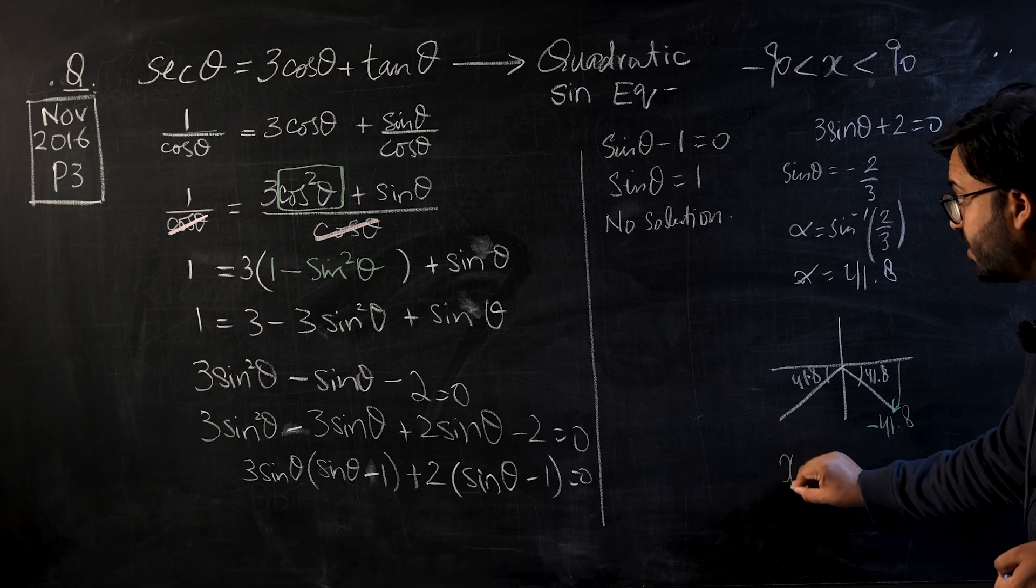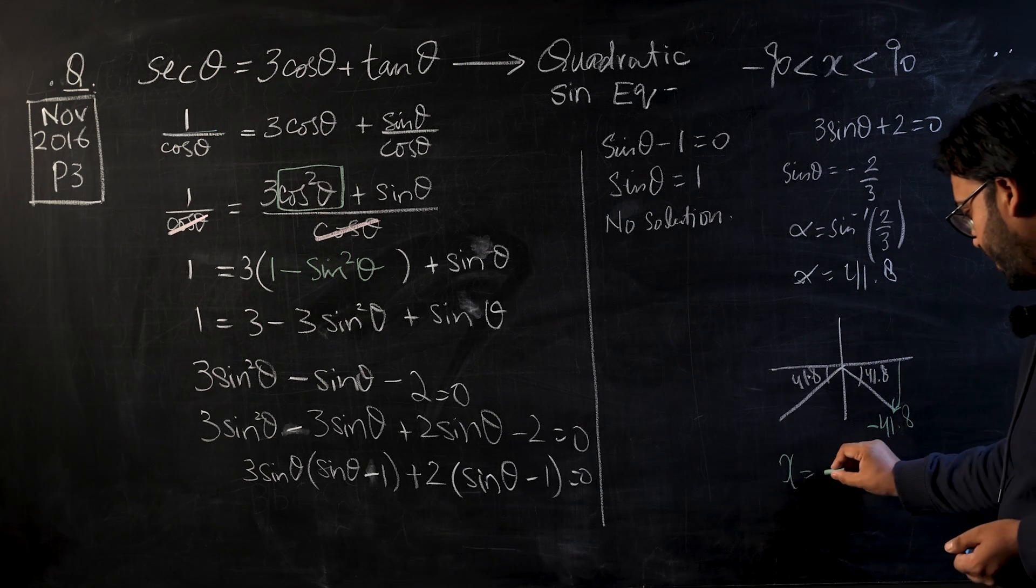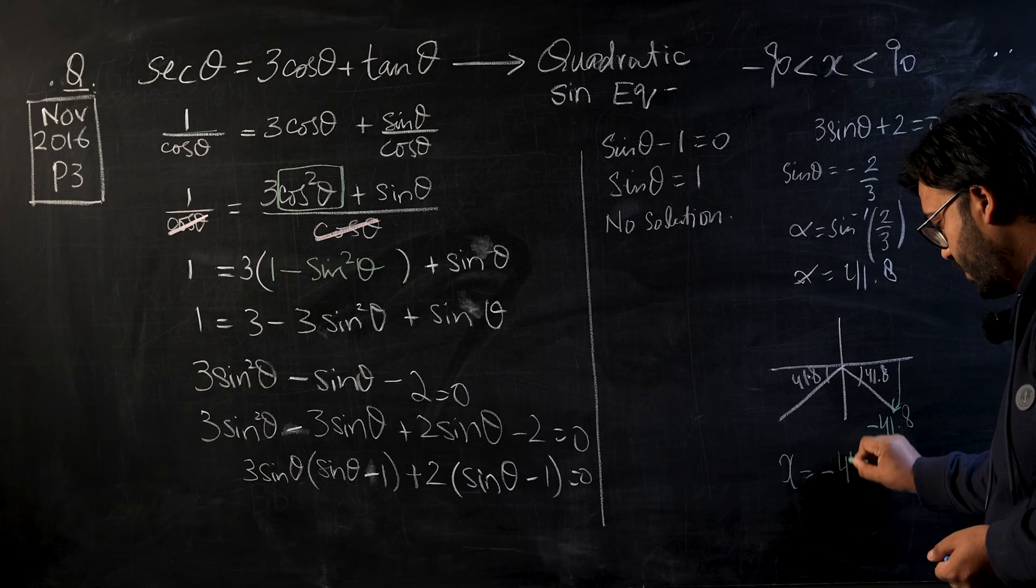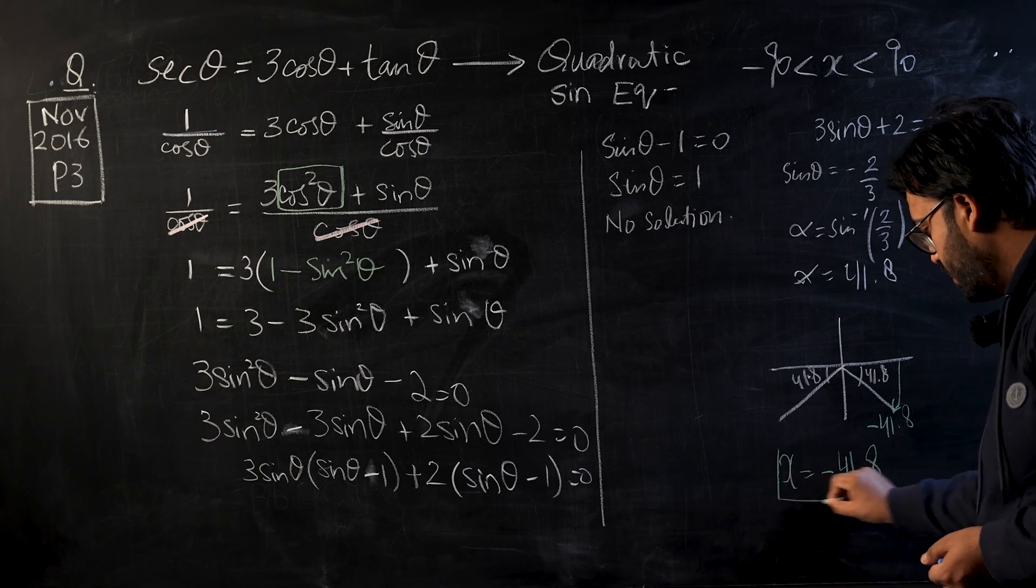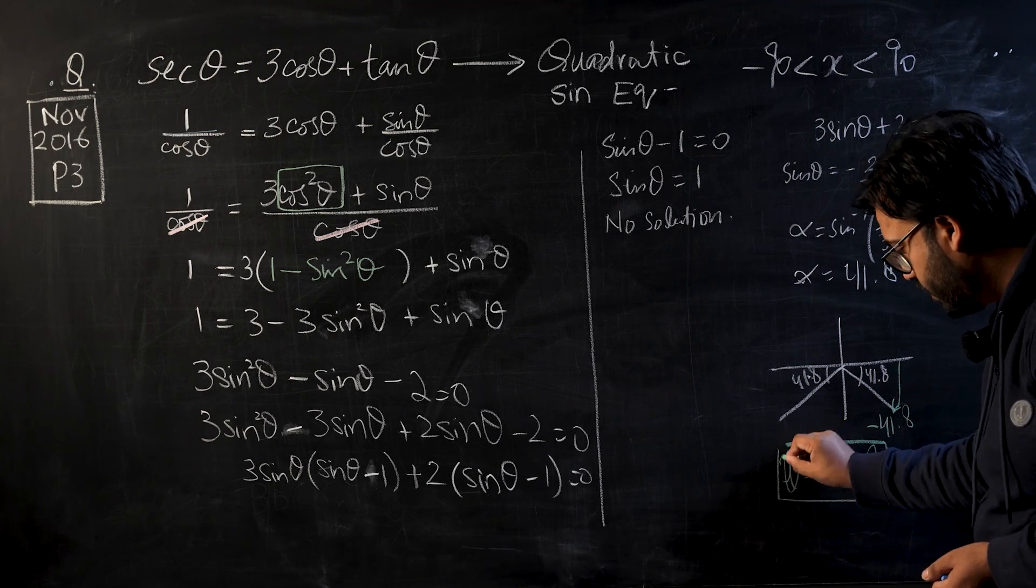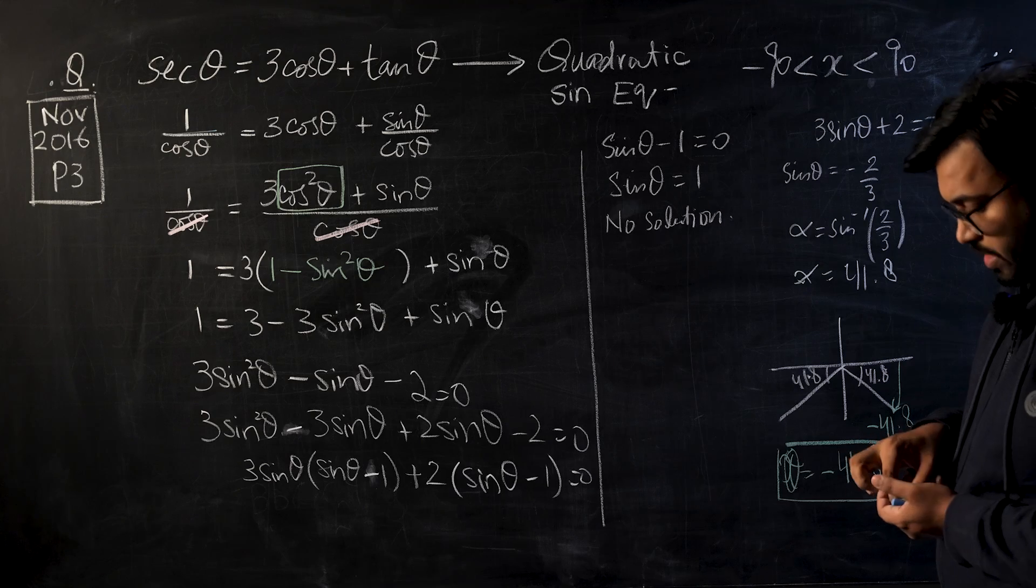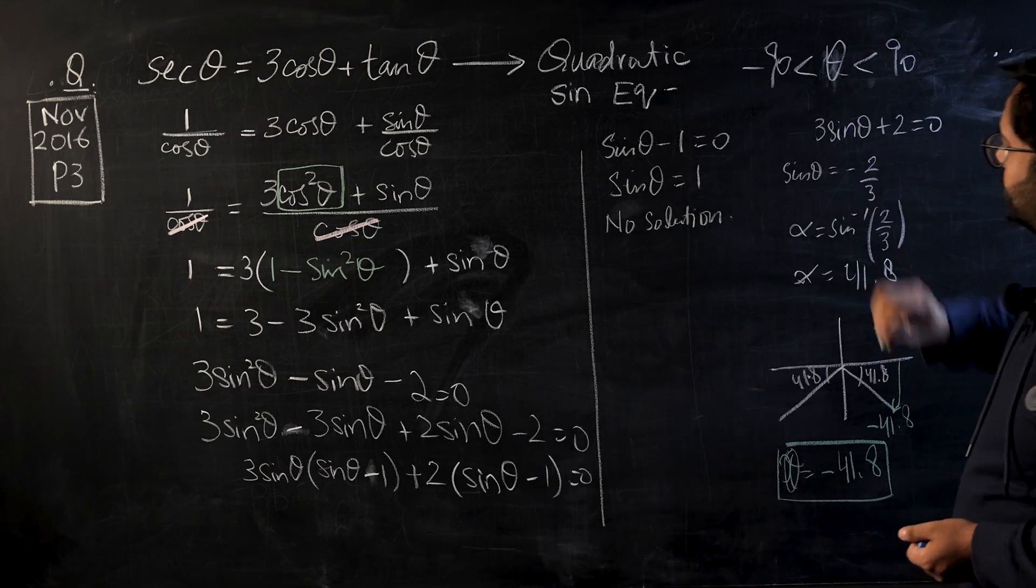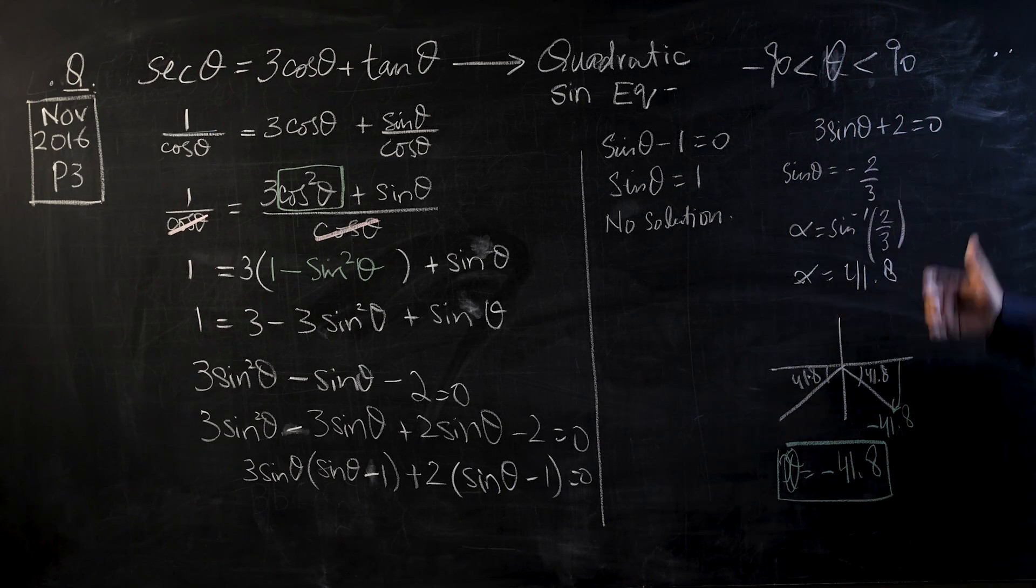And now we know that because our range is available in negative, we should first go into the negative coordinates and find this angle. So this would be negative 41.8. So the final value of x that I will have is negative 41.8. So this is our final value for theta or x.